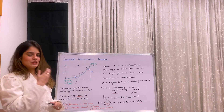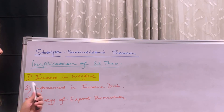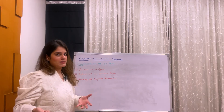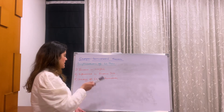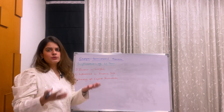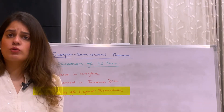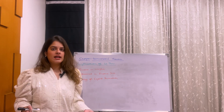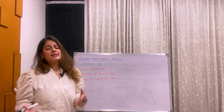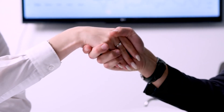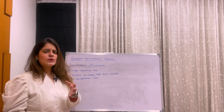Let's quickly run through the implications of the Stolper-Samuelson theorem. First, there is an increase in welfare — the abundant factor, labor, is definitely going to benefit and see improved welfare. Second, improvement in income distribution — it leads to a shift in income distribution and may achieve more equitable distribution. Third, it promotes a strategy of export promotion — trade encourages countries to promote exports rather than import substitution, which leads to growth and stability.